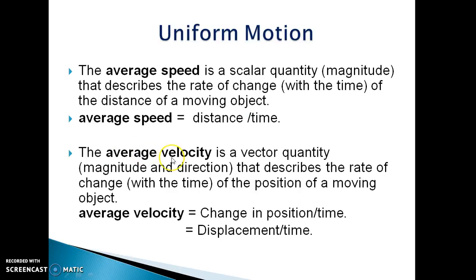Average velocity is a vector quantity. It has magnitude as well as direction, and average velocity is given by change in position divided by time, or displacement upon time.